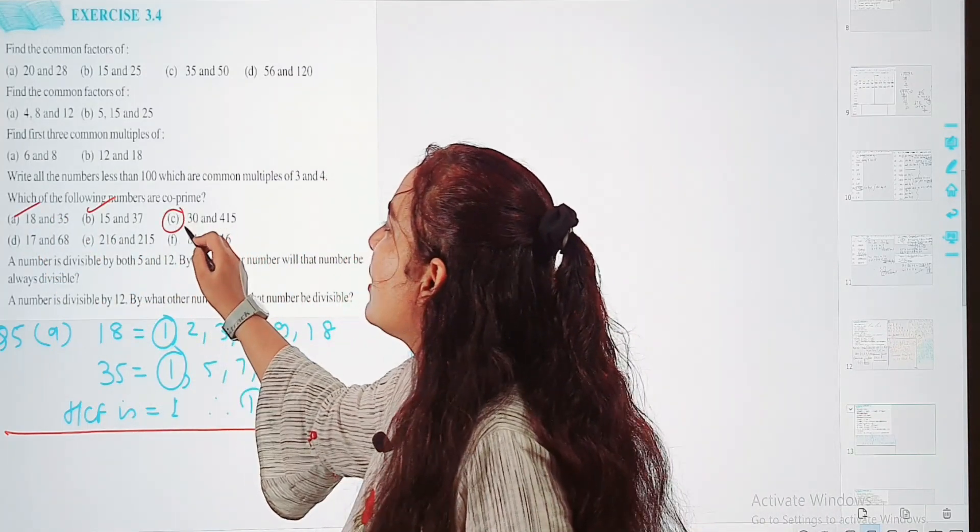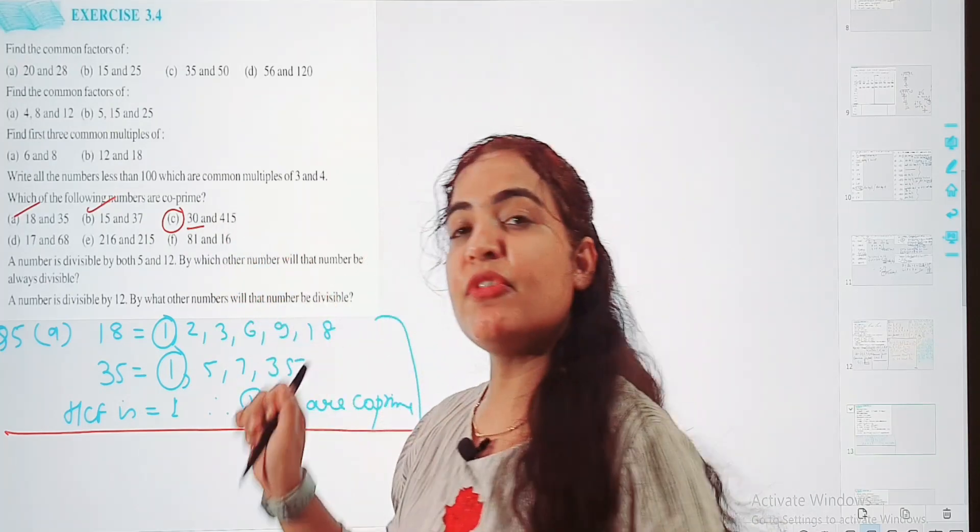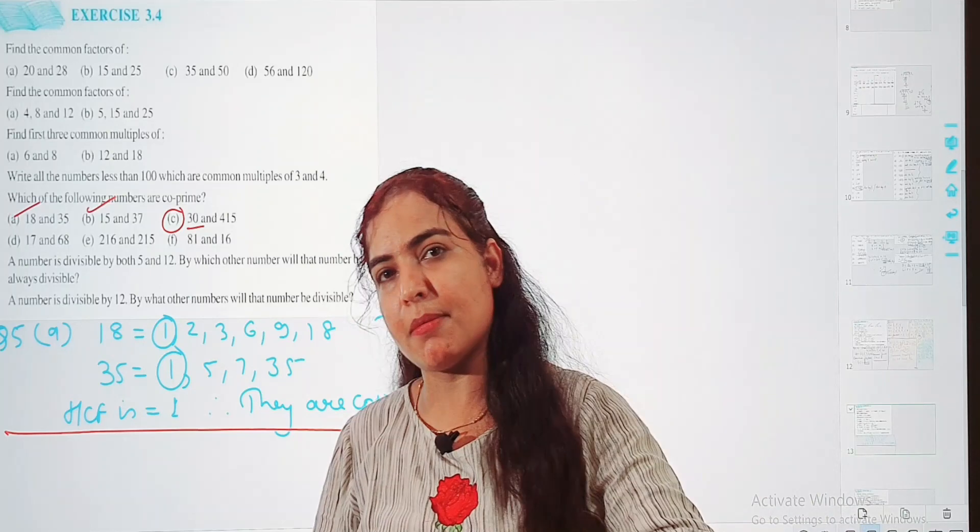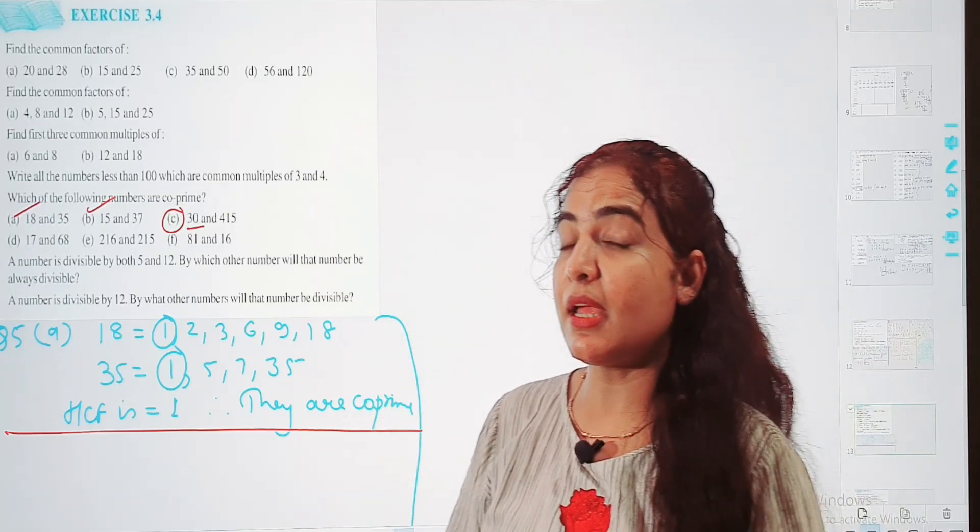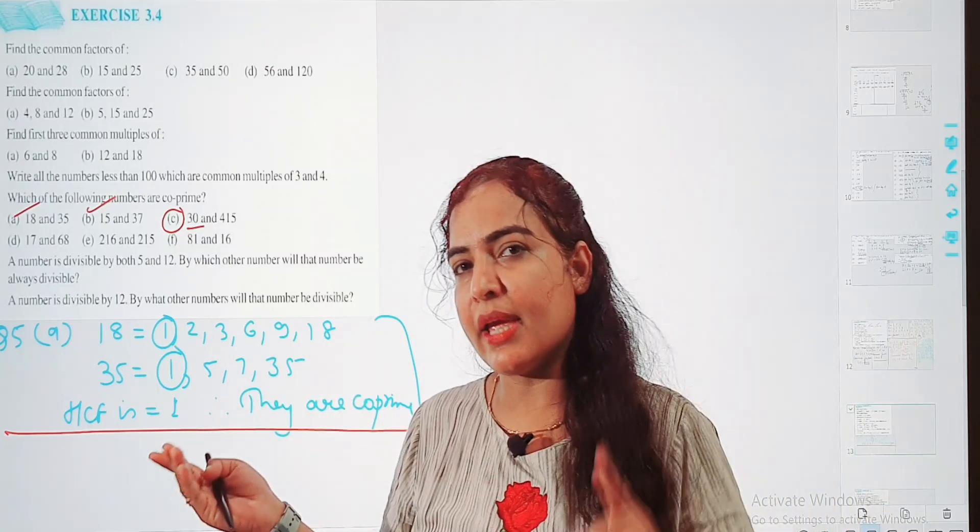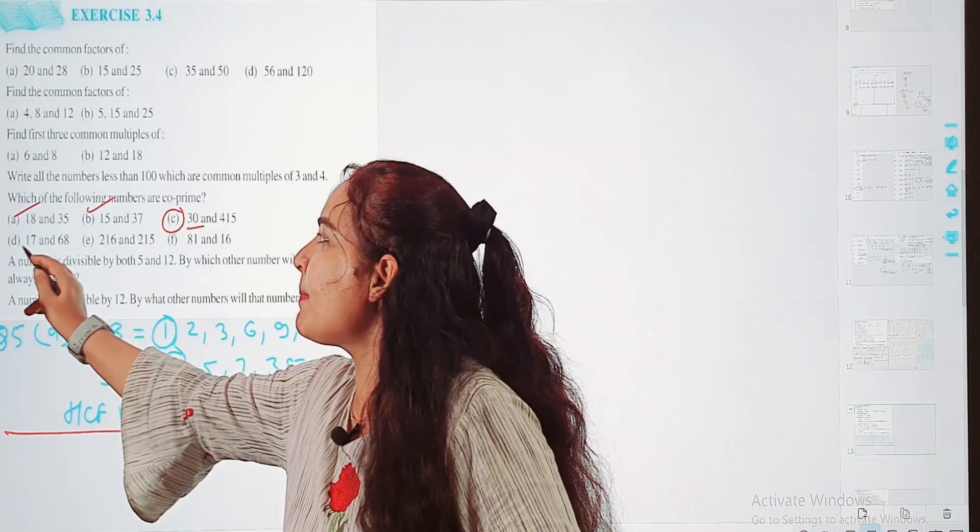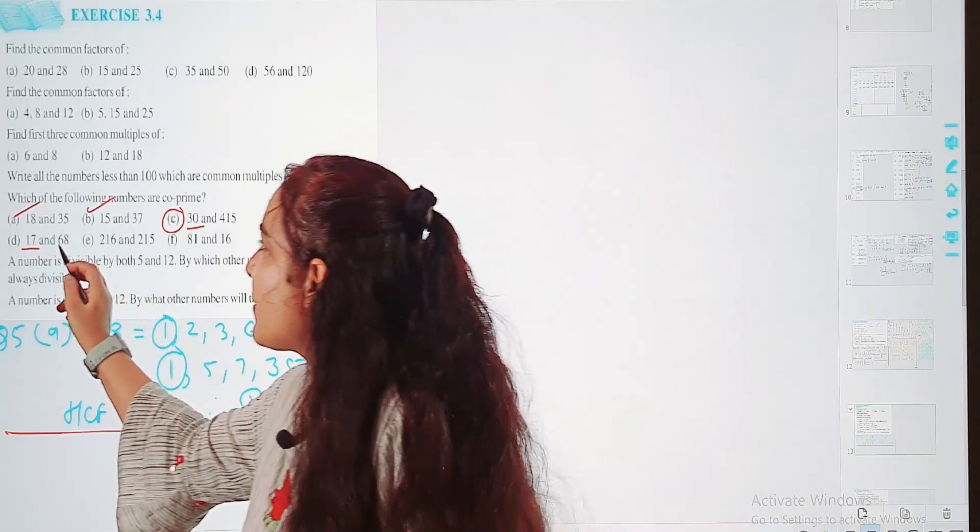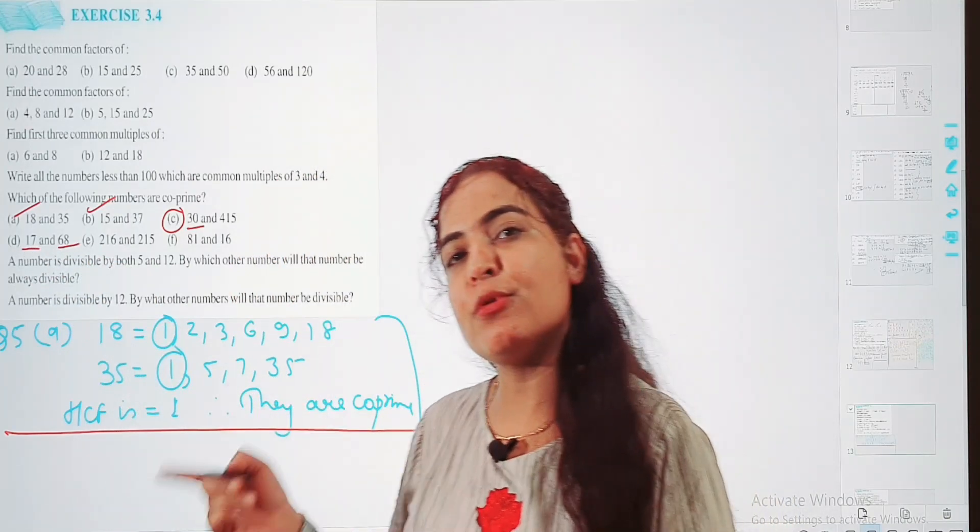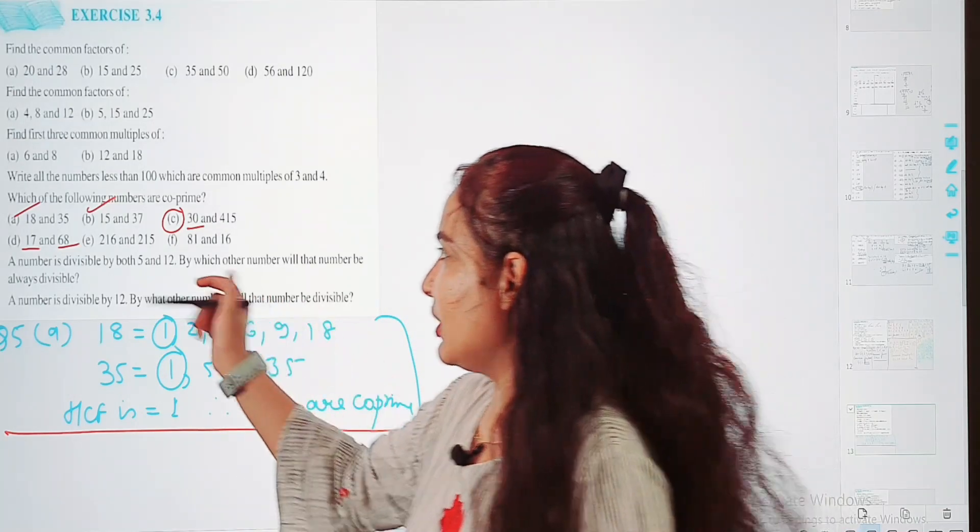Ye aapka nahi ho sakta, kyunki 30 ke table mein aata hai 1 ke bhi table mein aata hai. Aur 415 bhi 5 ke table mein aaega, 1 ke table mein aaega, aur 9 ke bhi table mein aasakta hai. More than 1 ho gya na, ek 1 ho gya, ek 5 ho gya. So ye co-prime number nahi ho gya. 17 aapka prime number hai, 68 aapka composite number hai. Composite and prime number me ekhi number HCF hootai hai, 1. So they are co-prime numbers.